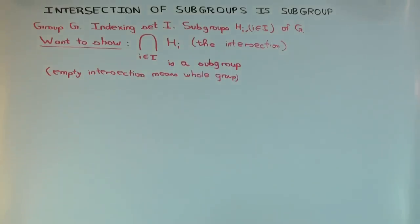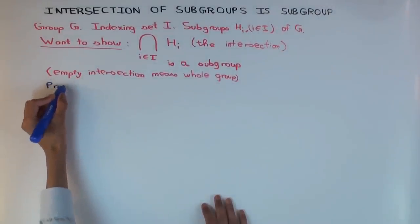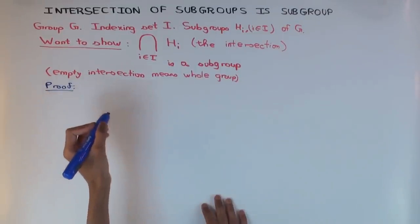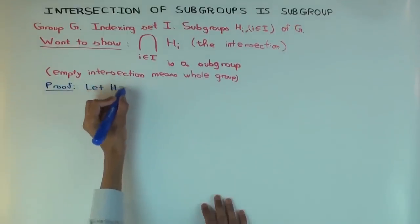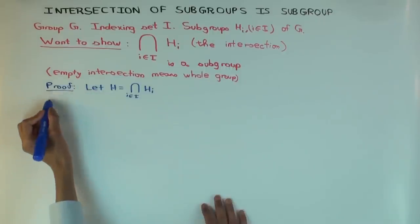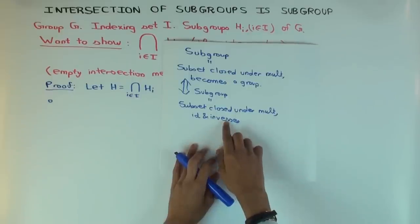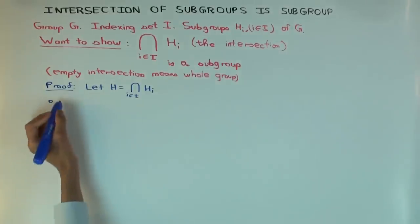We're going to prove that the intersection is closed under all three operations: identity, inverses, and multiplication. We can do them in any order. Let h be this intersection. The proof will show three things: it's closed under multiplication, identity, and inverses. Let's begin by showing that the identity is in h.